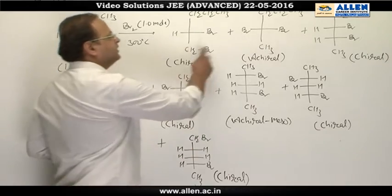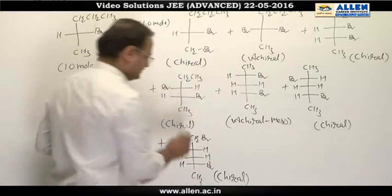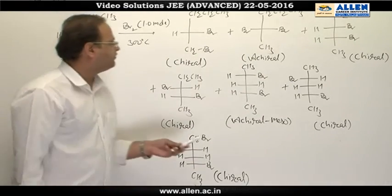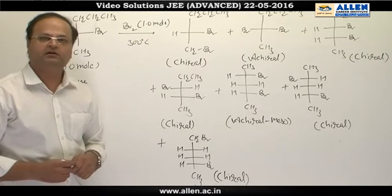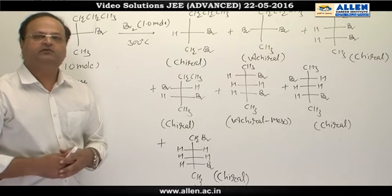So in all, we will be getting 1, 2, 3, 4, 5, 6, 7 products. Out of these 7 products, 2 are achiral. So the answer is 5.